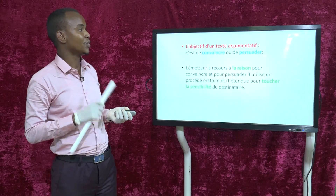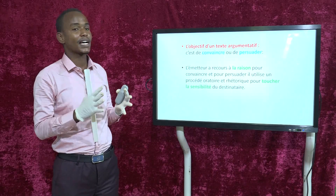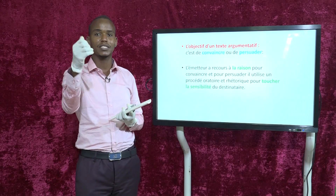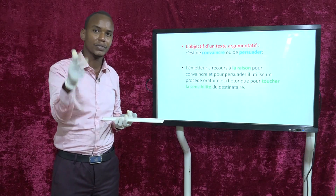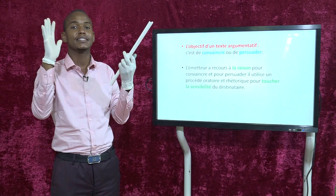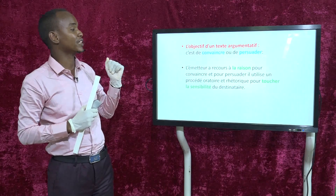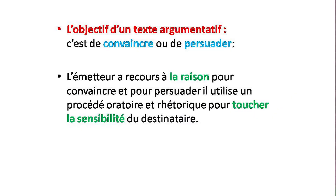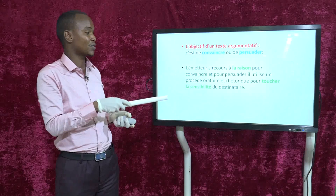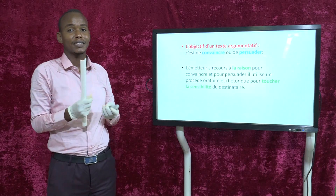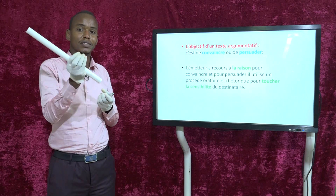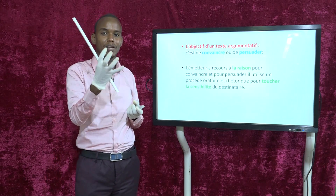Qu'est-ce qu'il faut retenir ? L'objectif d'un texte argumentatif, une fois qu'on a présenté les quatre pivots — le thème, la thèse, les arguments et les exemples — c'est de convaincre ou de persuader. Pour convaincre, l'émetteur a recours à la raison. Pour persuader, il faut utiliser un art oratoire et rhétorique pour toucher la sensibilité du destinataire — des arguments qui touchent les sentiments de la personne.